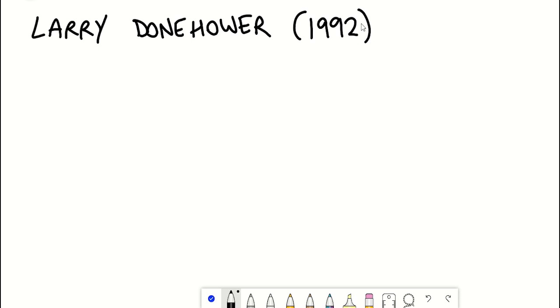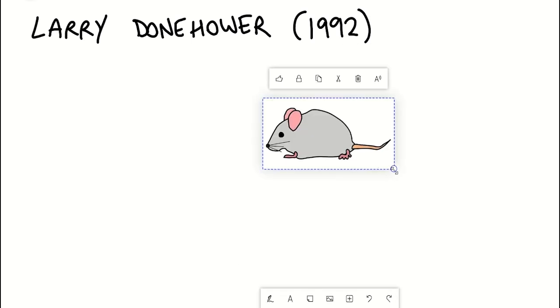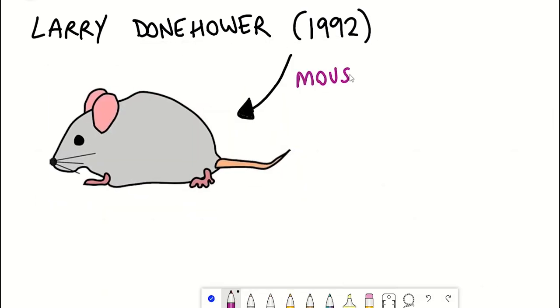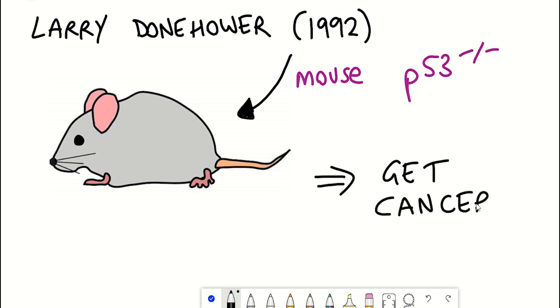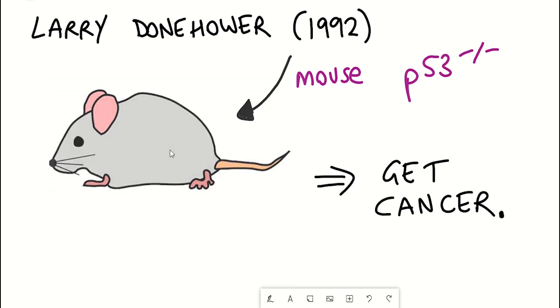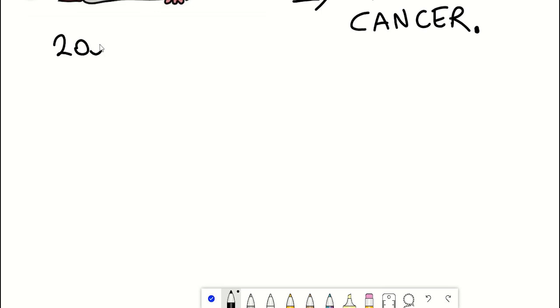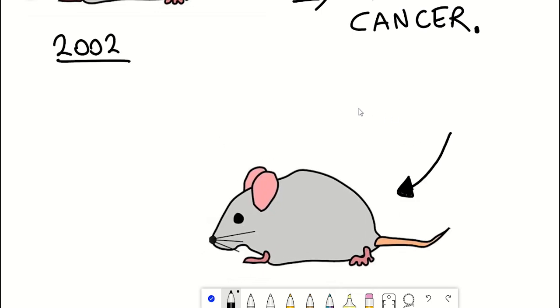Well back in 1992 Larry Dornhauer generated mice that didn't have any P53 and what he observed was that the mice get cancer. However what's really interesting is that in 2002 when Larry tried to regenerate the same mice without any P53 just using a different method he accidentally generated mice with hyperactive P53 instead.